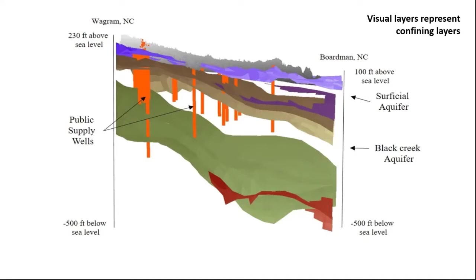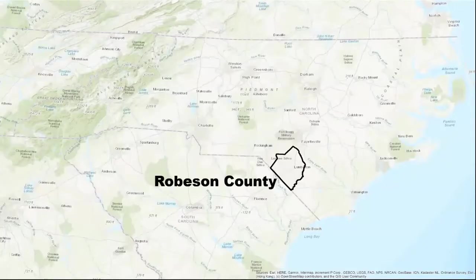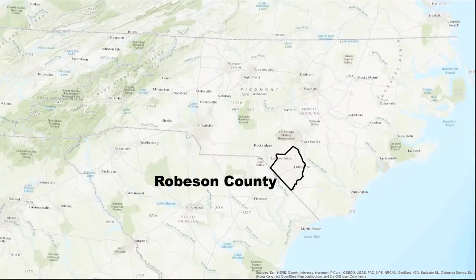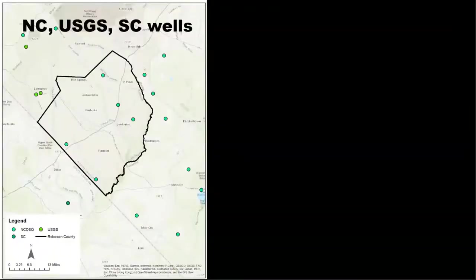We have public wells that exist throughout the aquifer and throughout the county. Some of these are North Carolina, USGS, and South Carolina wells surrounding our county. We're using these to get an understanding of what's going on, and to get around boundary issues. We're using data from sources such as NCDEQ, the South Carolina Department of Environmental Protection, and USGS to fill areas where we don't have detailed data.